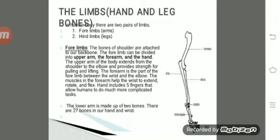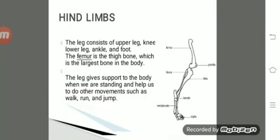The limbs include arms and legs — four limbs in total. The bones of the shoulder are attached to our backbone. The forelimb can be divided into the upper arm, forearm, and hand. The upper arm extends from the shoulder to the elbow and provides strength for pulling and lifting. The forearm is between the wrist and elbow, and its muscles help the wrist extend, rotate, and flex. The hand includes five fingers, and there are 27 bones in the hand and wrist.